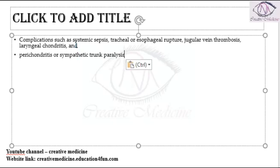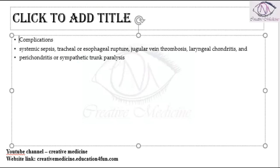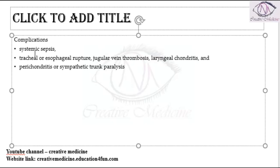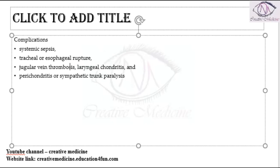In the complications of acute suppurative thyroiditis, the patient can have systemic sepsis. Due to the thyroid gland's extensive blood supply, the infection can travel to other parts of the body resulting in systemic sepsis. It can also travel to the esophagus and trachea, causing tracheal and esophageal rupture.